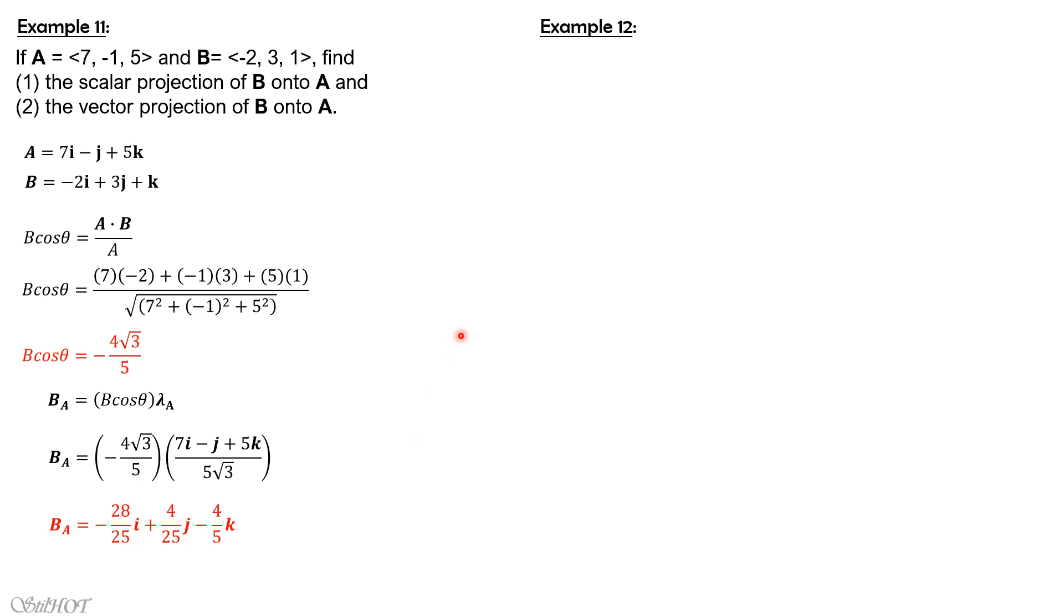Example 12. Three consecutive vertices of a parallelogram are (-3, 4), so this is just a 2D plane, (-5, -1) and (1, 1). Find the area of the parallelogram.